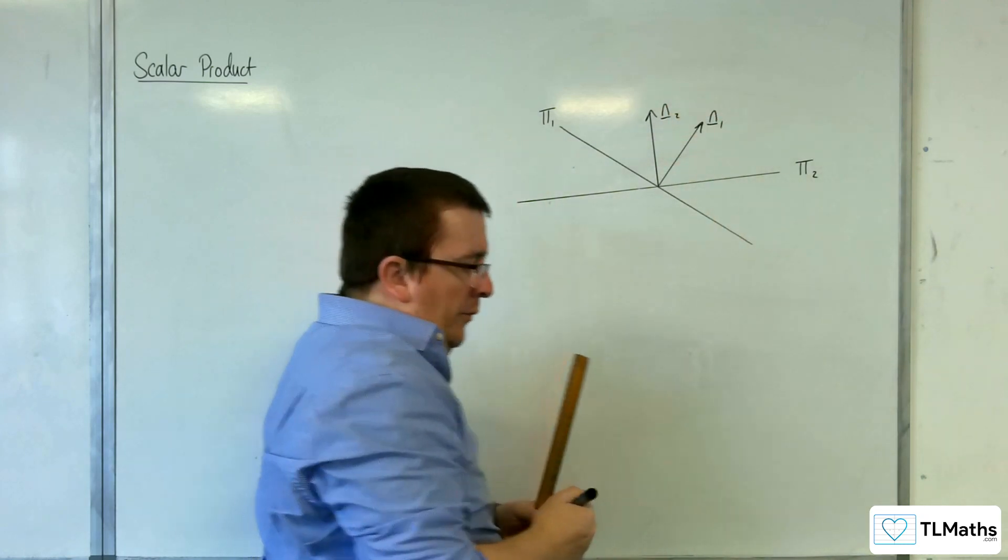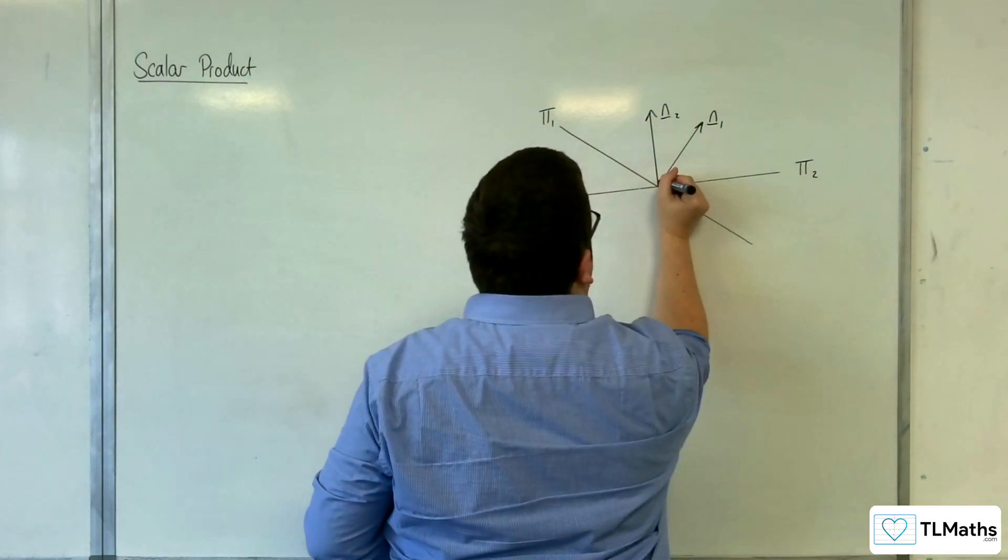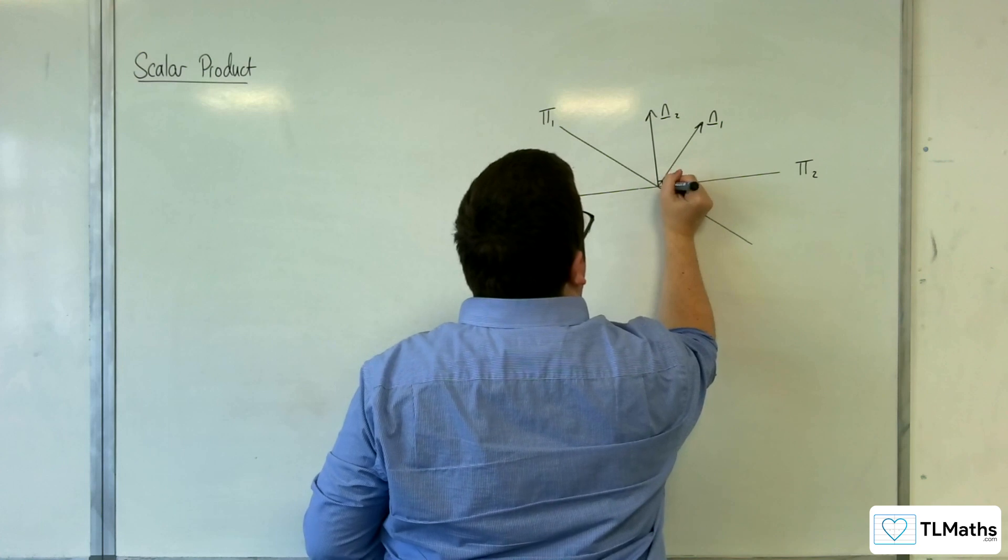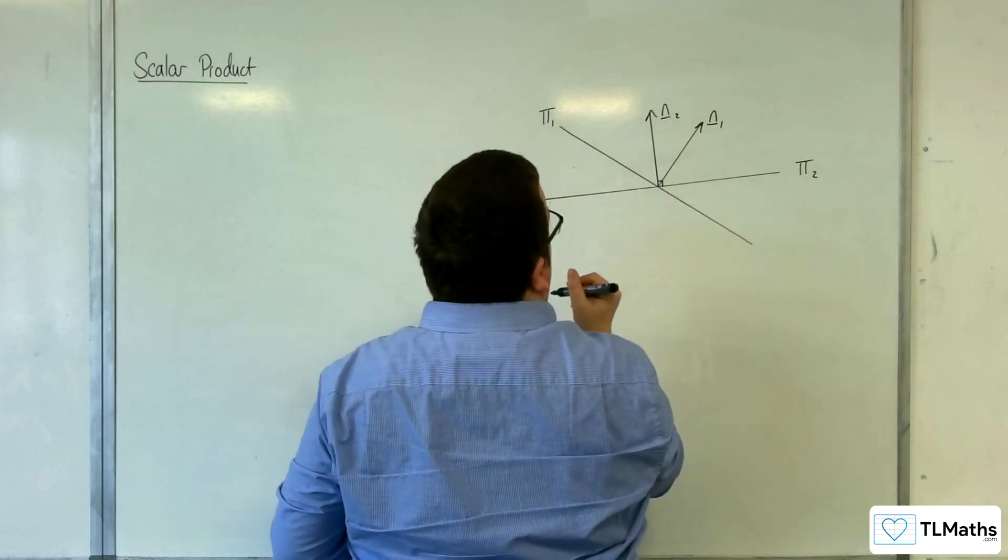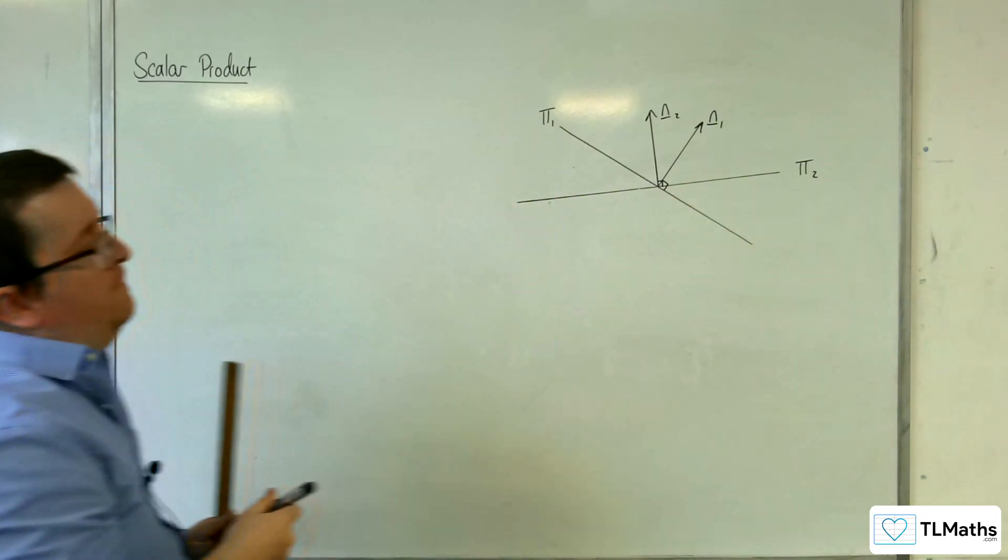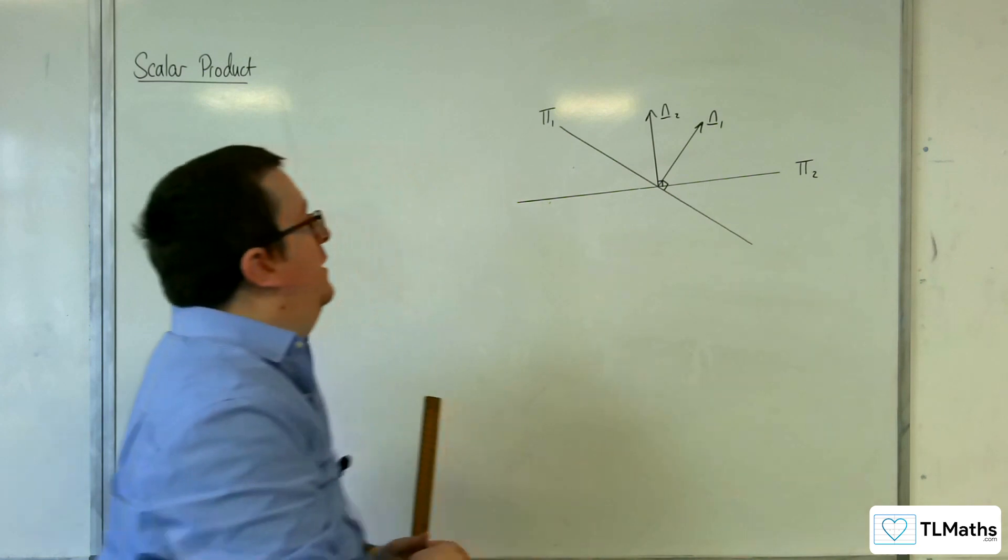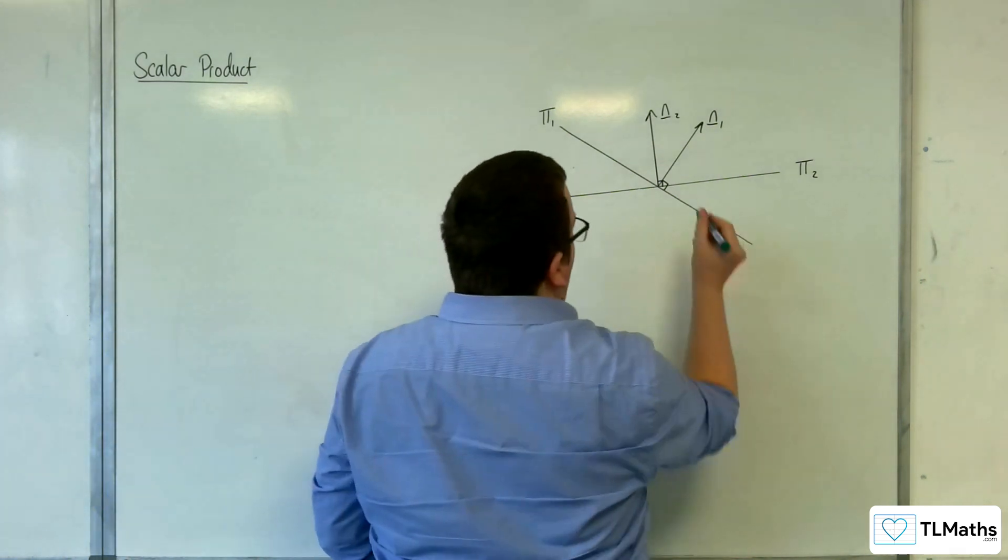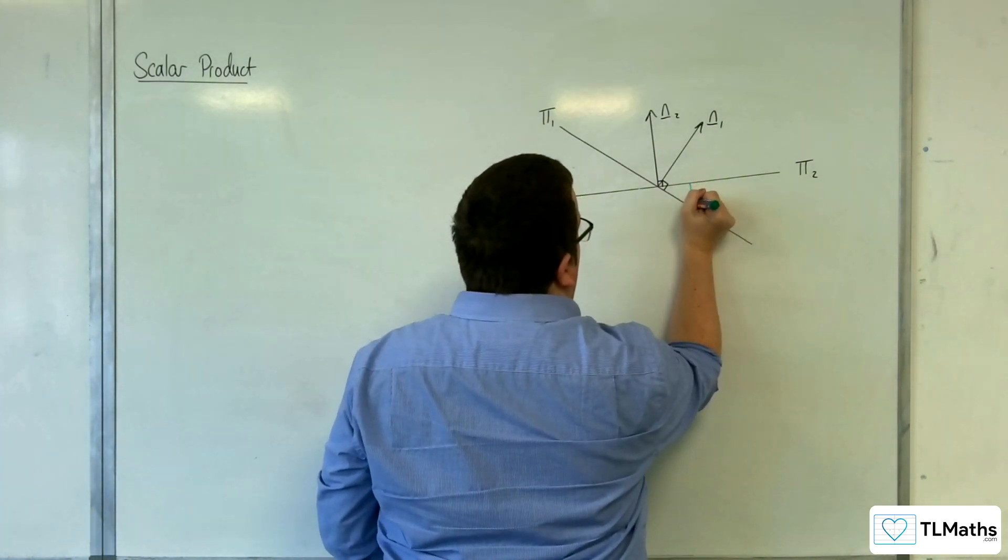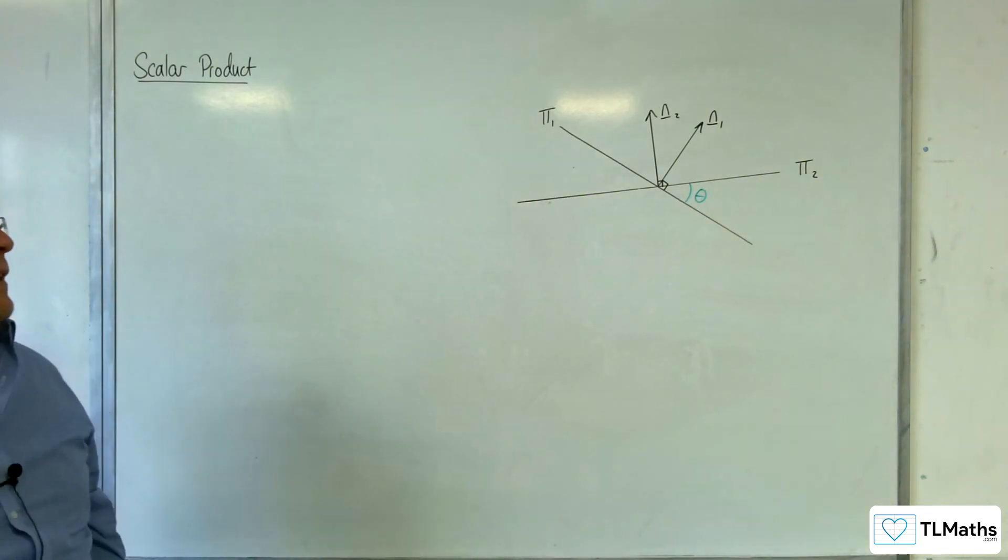So what's important is knowing that these are normal vectors. So that one is perpendicular to pi 2 and that one is perpendicular to pi 1. Then what we can do is take a look and say, what we want to find is this angle here. This is the angle theta that I am interested in.